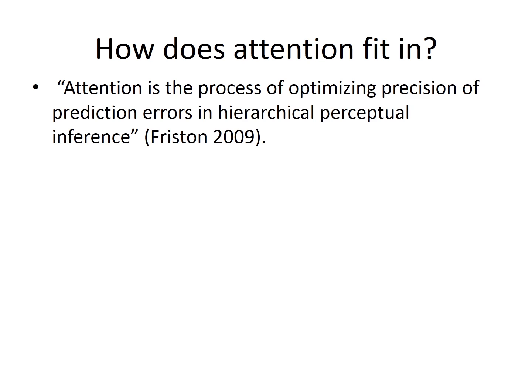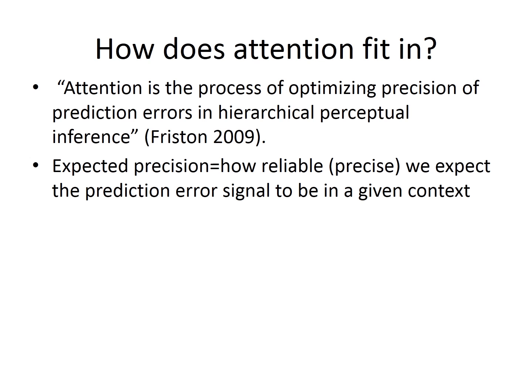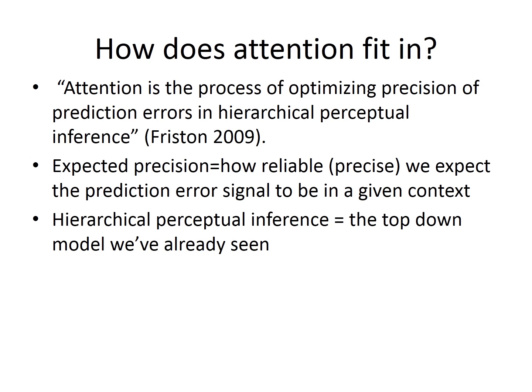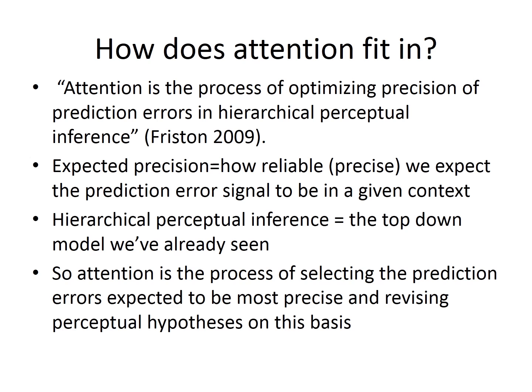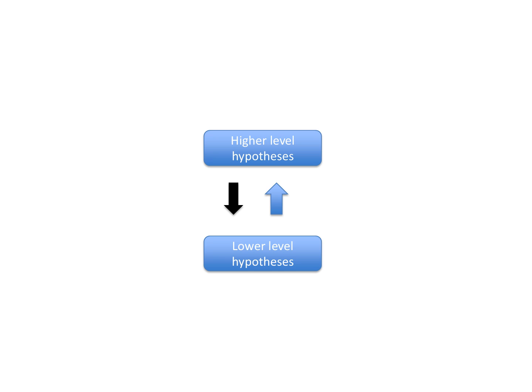So how does attention fit in? On predictive coding, attention is the process of optimizing precision of prediction errors in hierarchical perceptual inference. Let's unpack this with the tools that we've already covered. As we've learned, expected precision is how reliable or precise we expect the prediction error signal to be in a given context. Hierarchical perceptual inference just is the top-down model we've already seen. So, attention is the process of selecting the prediction errors expected to be the most precise and revising perceptual hypotheses on this basis. As we've seen, high expected precision causes prediction error to be amplified. And this amplification is attention. The object hypotheses generating the amplified prediction error are those that are attended.